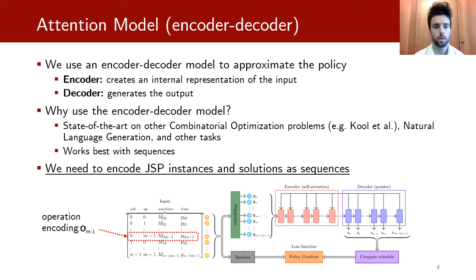To solve the JSP, we use the attention model, which is a particular type of encoder-decoder model. The encoder-decoder model is used to approximate the policy and is composed of the encoder, which creates an internal representation of the input, and the decoder, which is concerned with generating the output, that in our case is the solution of the JSP.